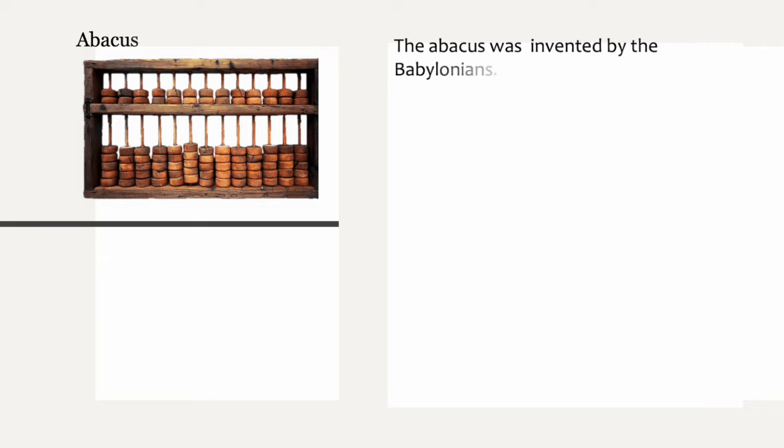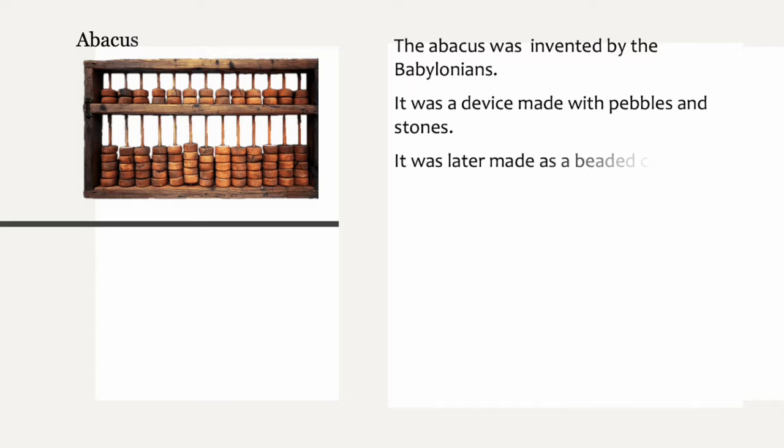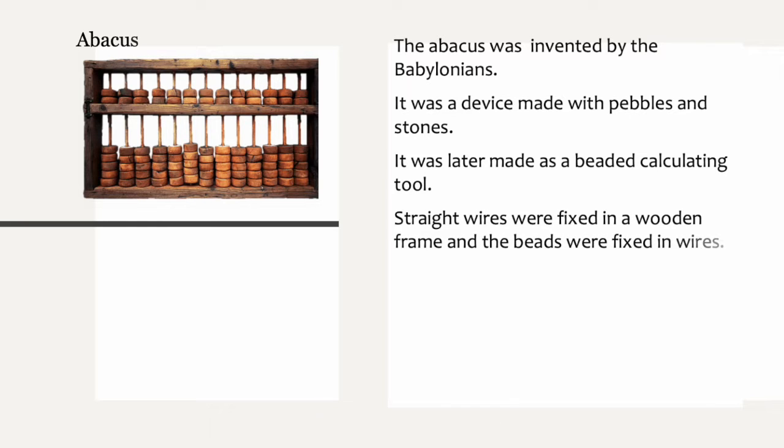The abacus was invented by the Babylonians. It was a device made with pebbles and stones. It was later made as a beaded calculating tool. Straight wires were fixed in a wooden frame and the beads were fixed in wires. Beads would be moved along the wire.